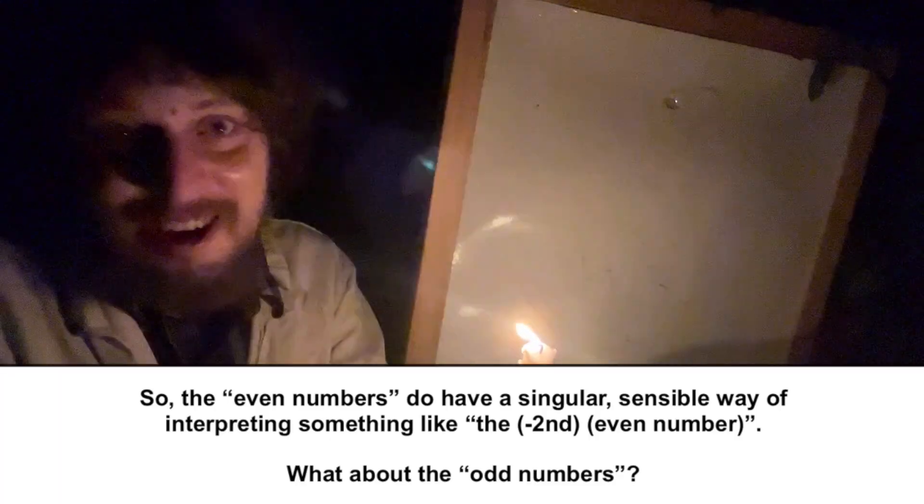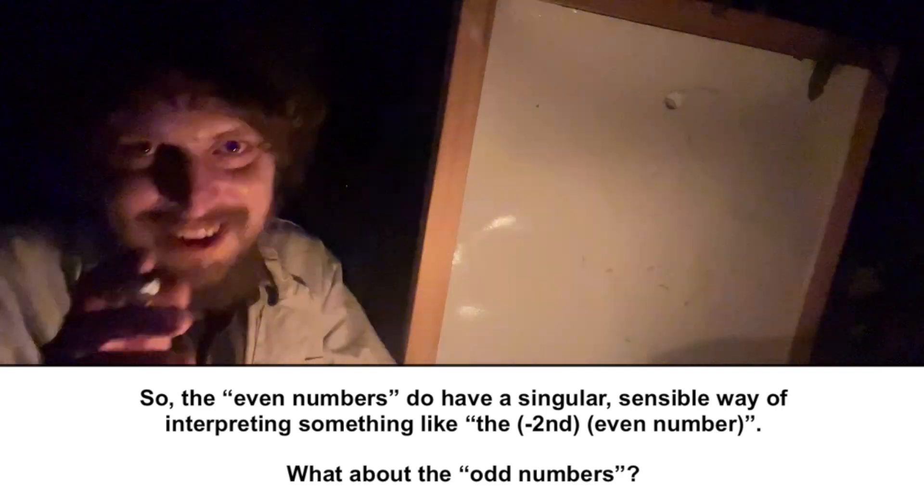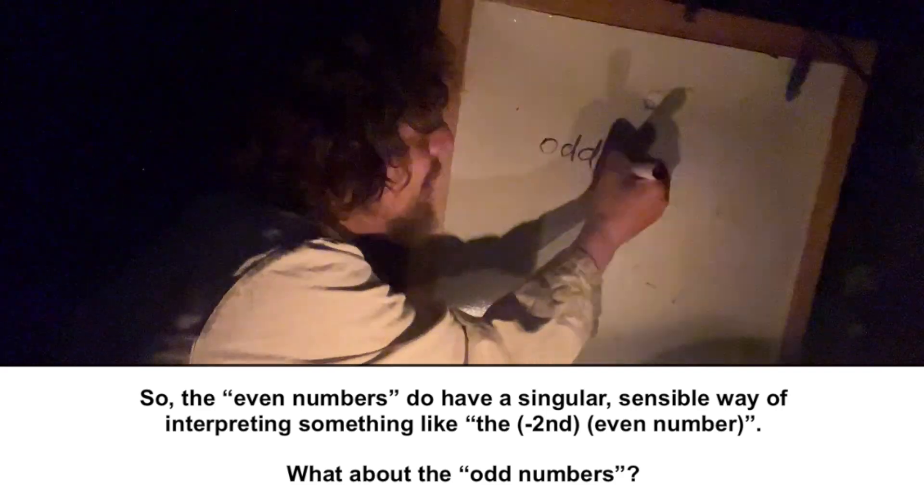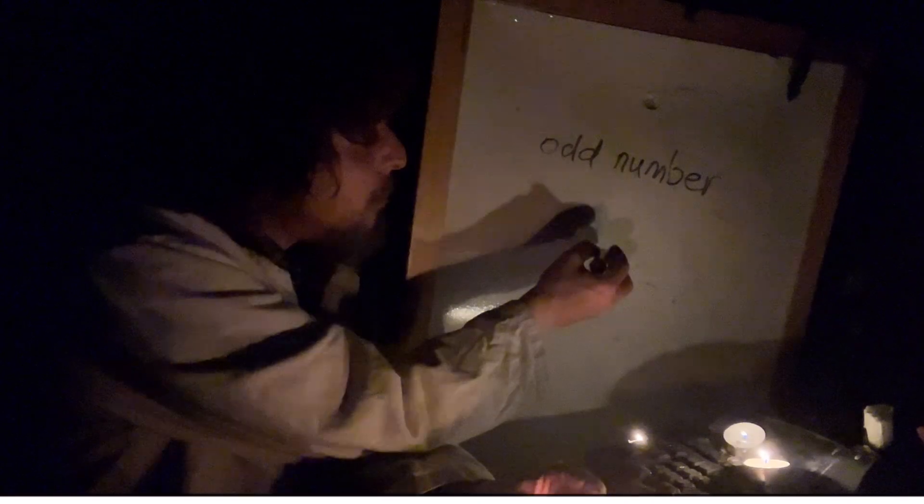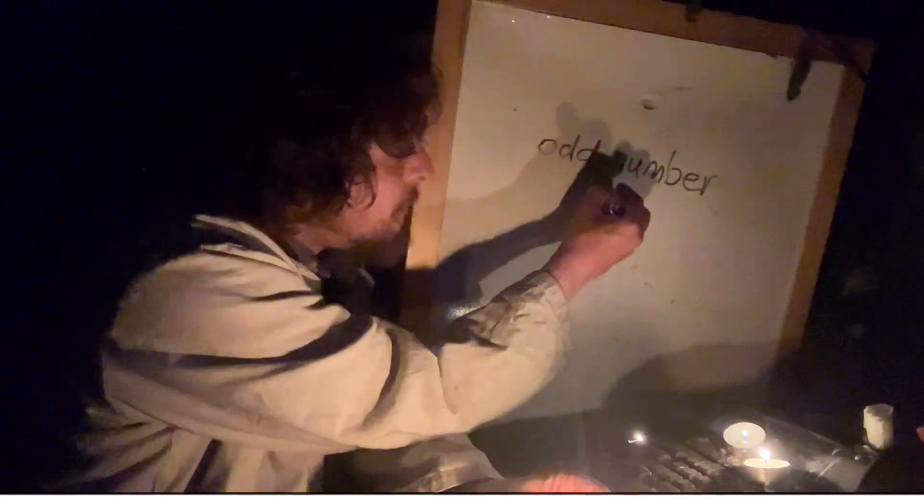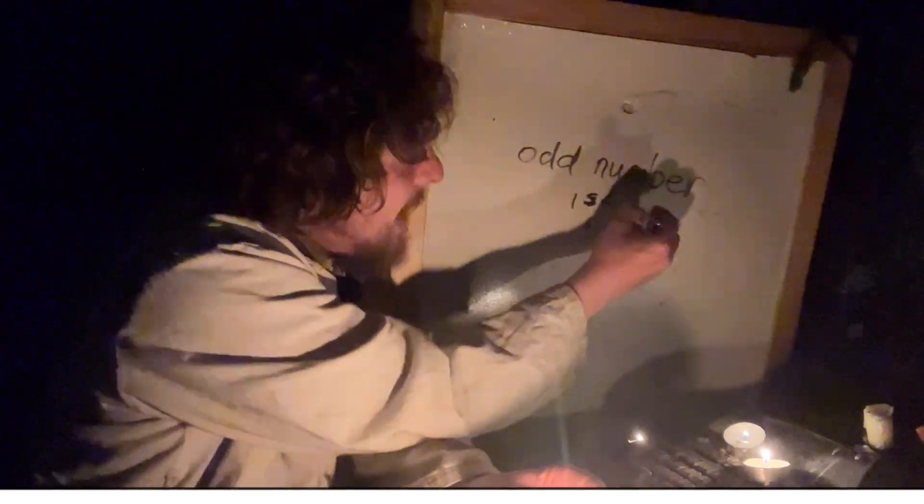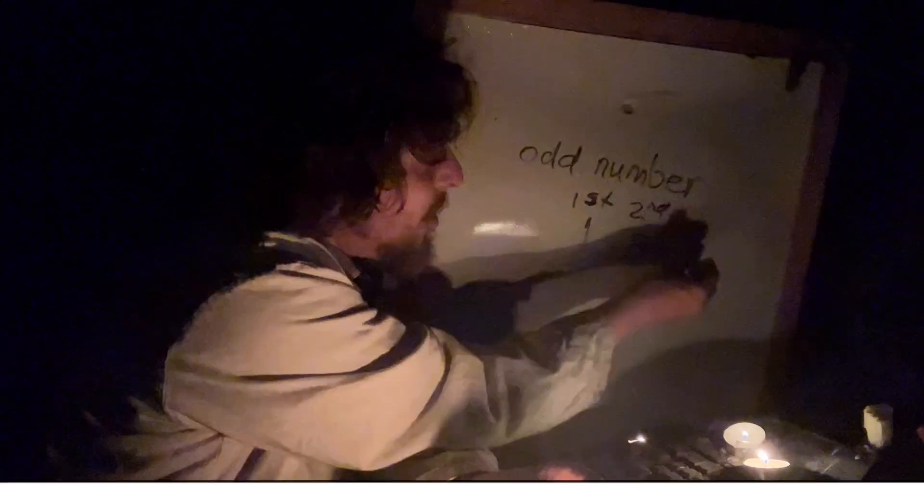But what about the odd numbers? So, now let's get to this original whiteboard. Now, with odd numbers, things get kind of weird because with odd numbers, if you were to ask somebody who doesn't study much math, what is the first odd number, they would probably say that the first odd number was one and that the second odd number was three and so on.